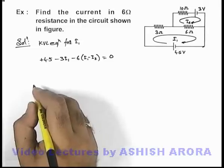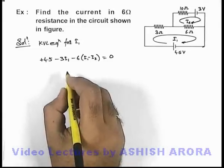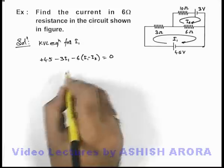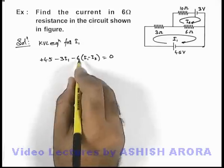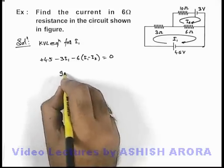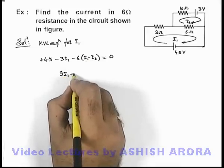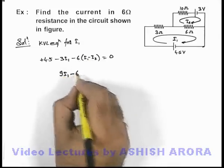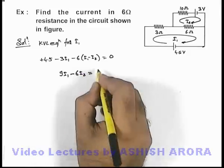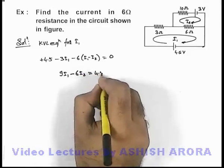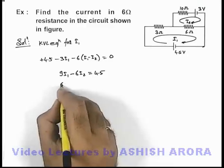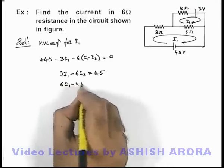For the second loop if we write the equation, we can also simplify this equation. This will give us 6 plus 3, 9i1 minus 6i2 is equal to 4.5. If we further simplify it can be written as 6i1 minus 4i2 is equal to 3. Say this is equation 1.